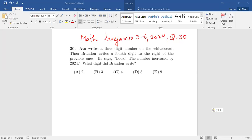Let's read the question. Eva writes a three-digit number on the whiteboard. Then Brandon writes a fourth digit to the right of the previous one. He says, 'Look, the number increased by 2024.' What number did Brandon write?